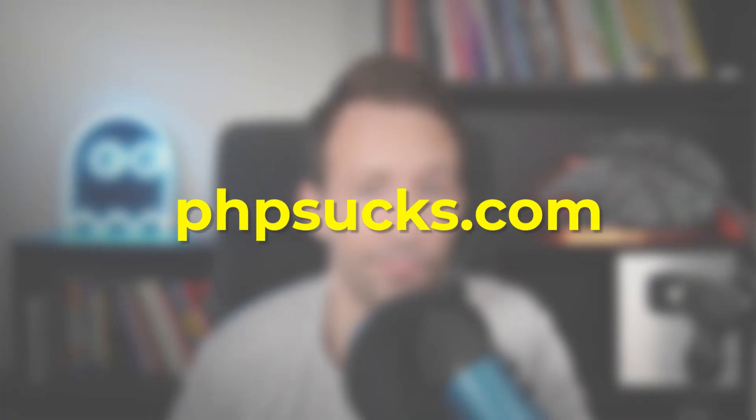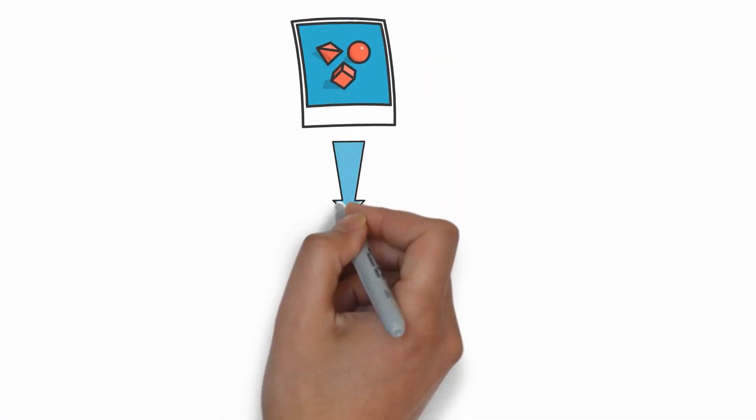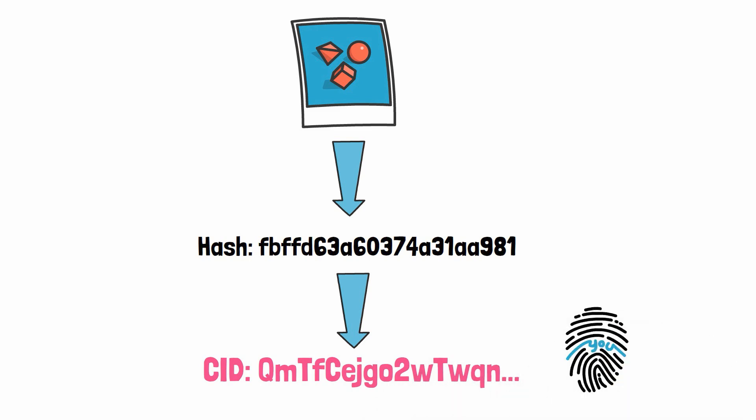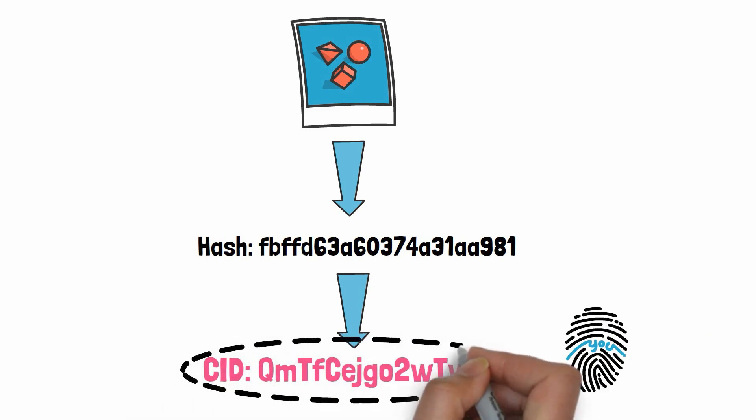With a URL, anybody can pick what they want, like phpsucks.com. But how does it work with CIDs? It's completely different. A CID is based on the cryptographic hash of the data — you can see it as a digital fingerprint. It uniquely identifies a specific piece of data, and it's computed by IPFS every time you upload a new file. But there is something strange: if anybody can upload anything to IPFS, who is going to pay for data storage?